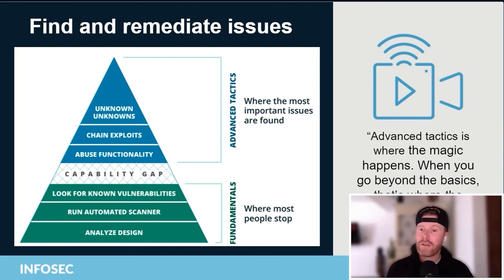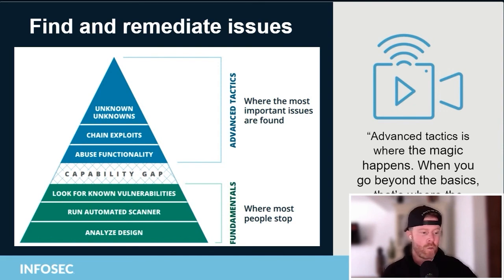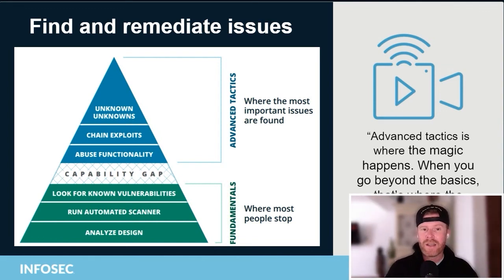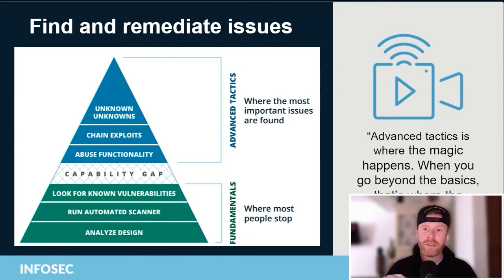In theory, each user only knows their own user identifier. But when you combine that with the information leakage — where any user can identify any other user — it means any user of the system can take over the account of any other user, including the admin users, and could completely destroy the system. We're talking complete system takeover.